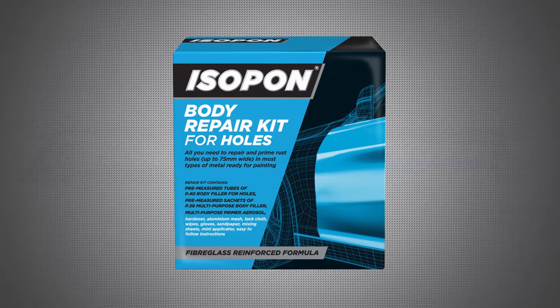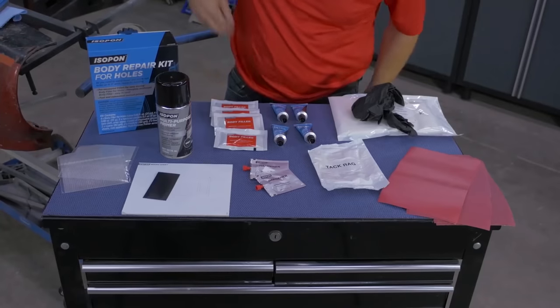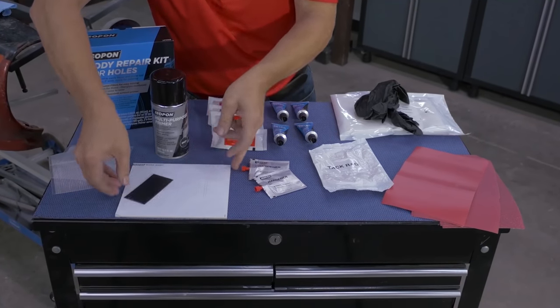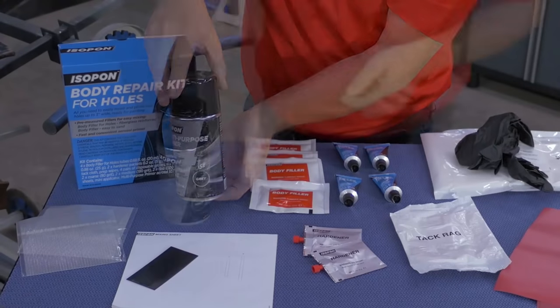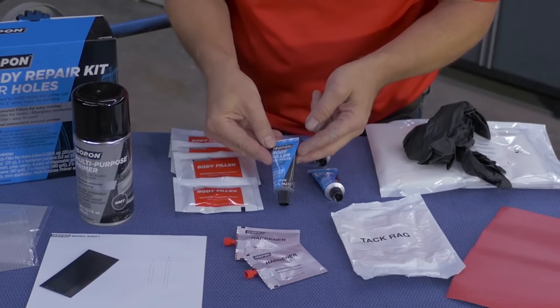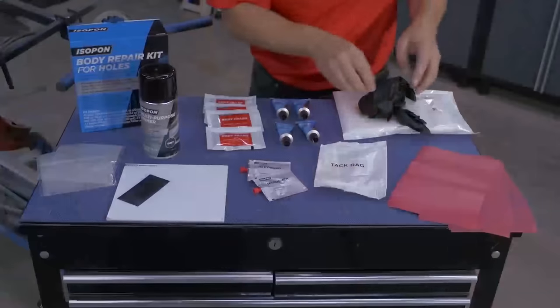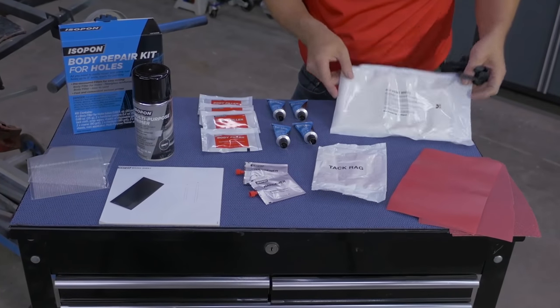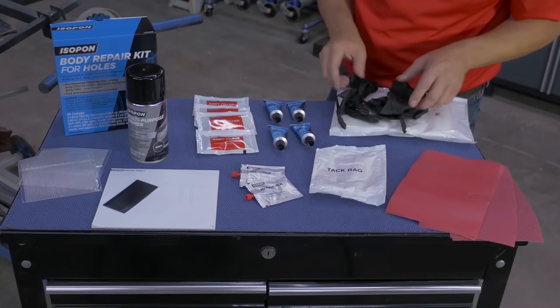Let's take a look at everything that comes in the body repair kit for holes. Two sections of aluminium mesh screen for holes up to 75 millimeters in diameter, a spreader, peel away mixing sheets with two different ratios, primer, body filler, fiberglass reinforced body filler, hardener, a tack cloth, several pairs of protective gloves, a convenient resealable bag of solvent wipes and coarse, medium and fine grit sandpaper.